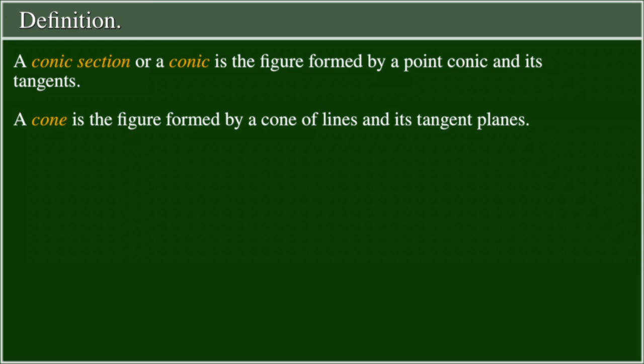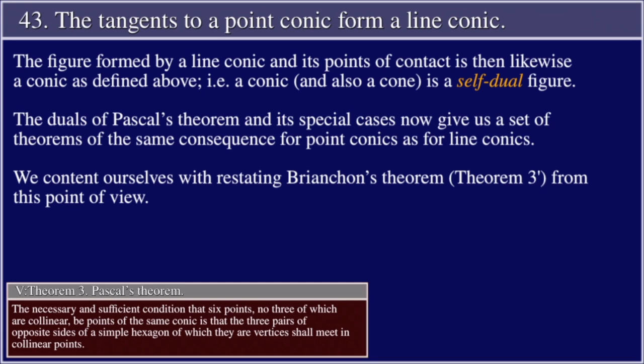A cone is the figure formed by a cone of lines and its tangent planes. The figure formed by a line conic and its points of contact is then, likewise, a conic as defined above. I.e., a conic, and also a cone, is a self-dual figure.